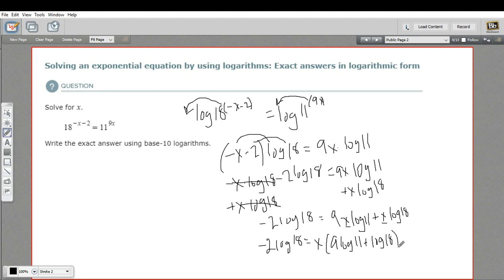And once I've got the x factored out, I can just divide both sides by this term. So 9 times the log of 11 plus log of 18. And of course, we do that on both sides of the equation. So we get 9 times the log of 11 plus the log of 18. And these cancel out. So I just get x equals negative 2 log of 18 over 9 times the log of 11 plus the log of 18.